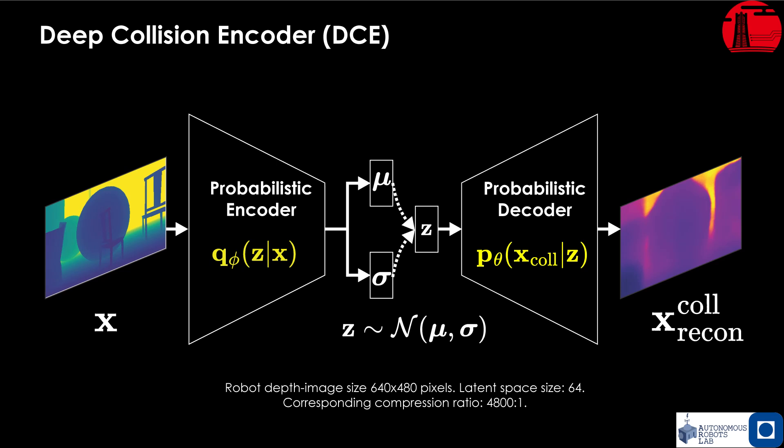A deep collision encoder is trained using depth images along with a decoder to reconstruct the collision image. The latent space is compressed up to 4800 times the size of the original depth image while still capturing the information needed for collision-free navigation.